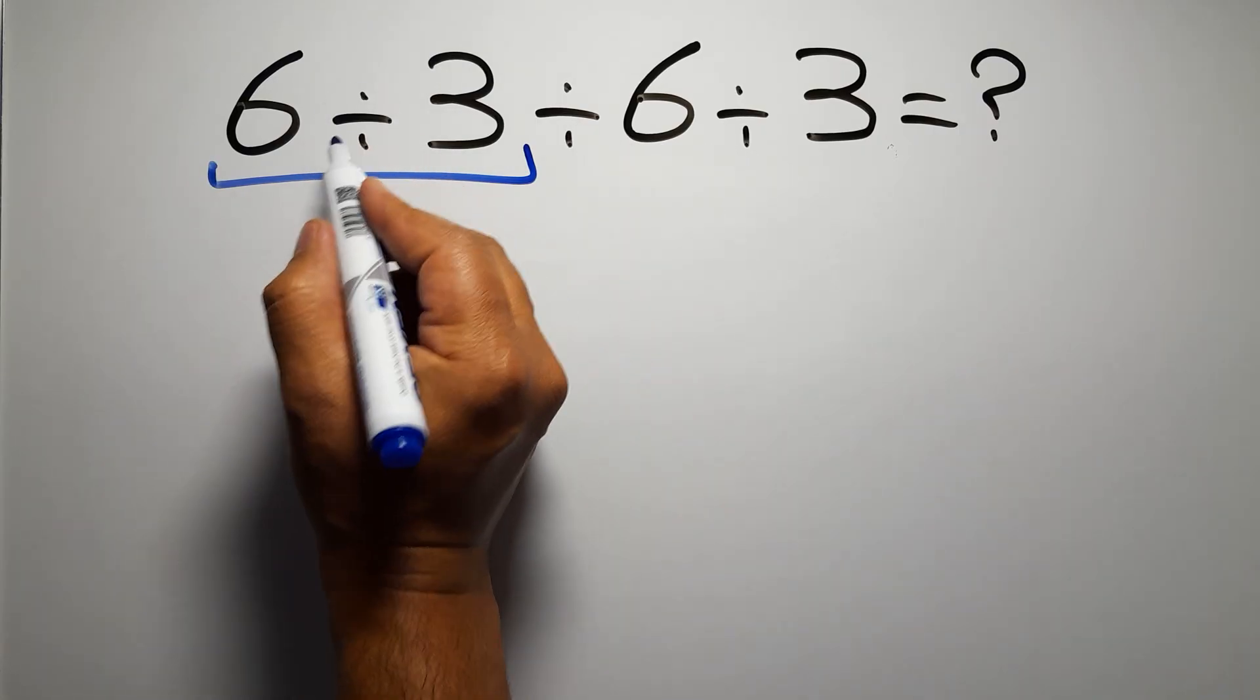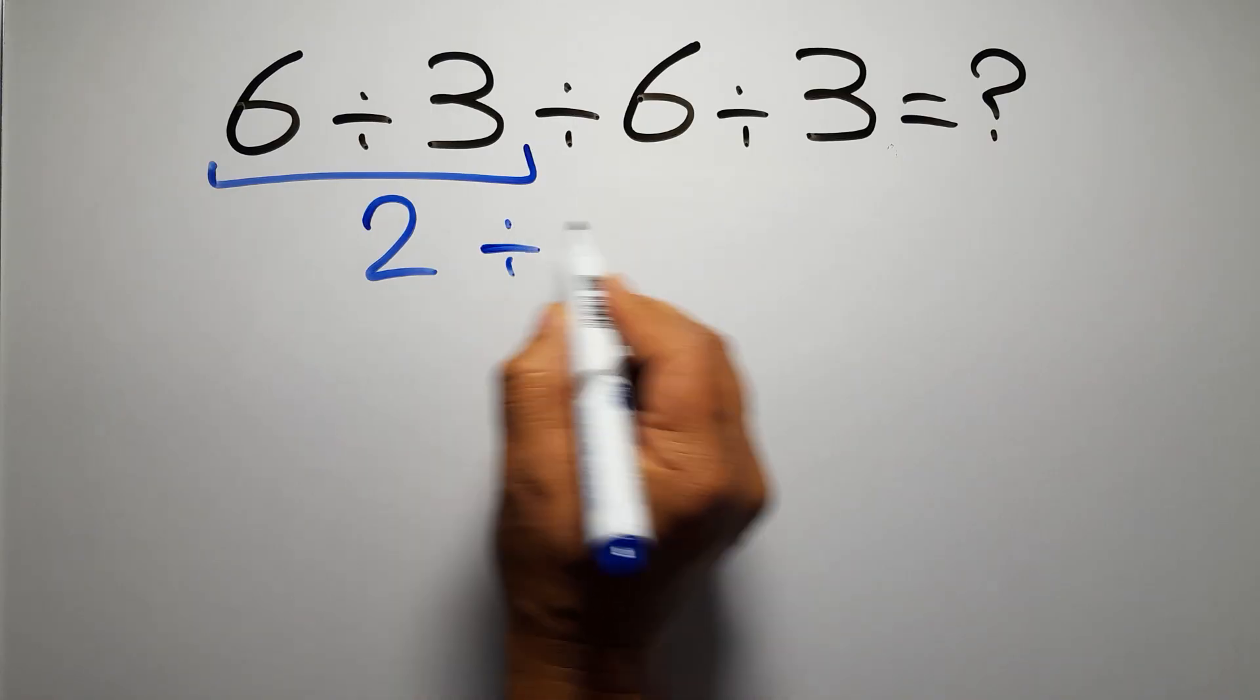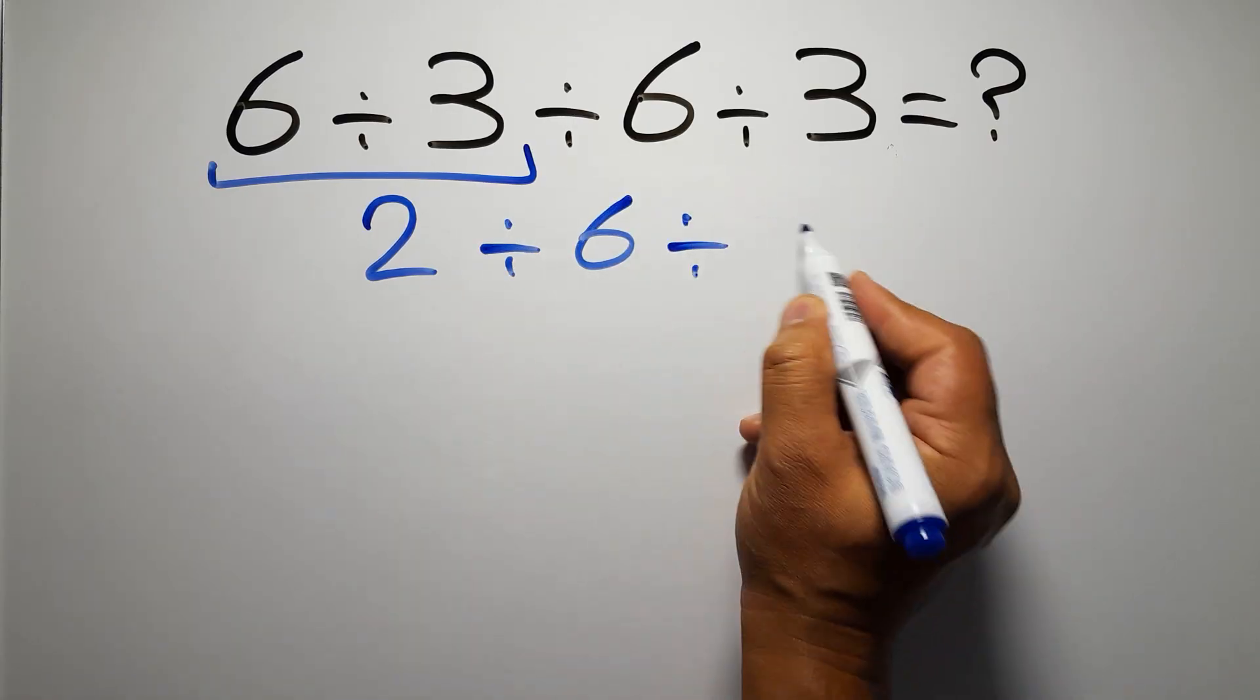So first we have to do this division. 6 divided by 3 is just 2, so 2 divided by 6 and divided by 3.